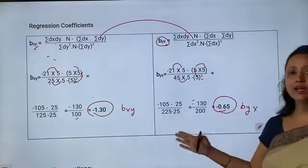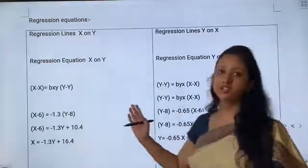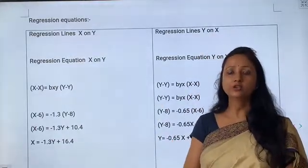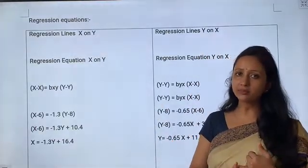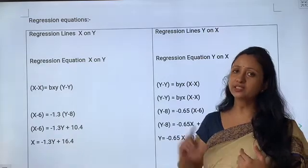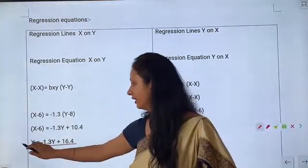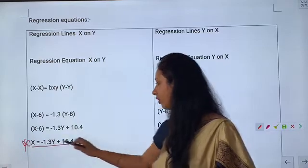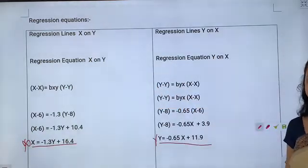In all three methods, bxy and byx came out the same. The regression equations are the same as those solved in the original value method. From the x on y equation we find x's quantity, and from the y on x equation we find y's quantity. Thank you.